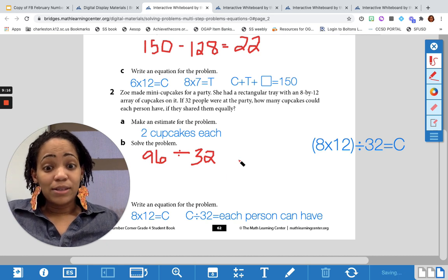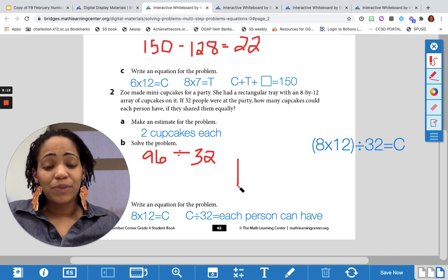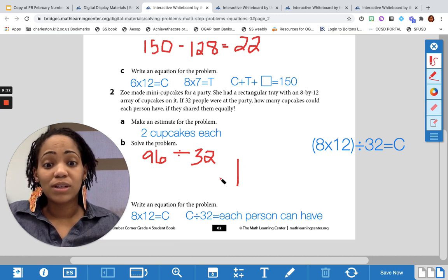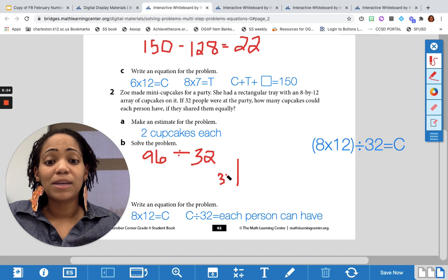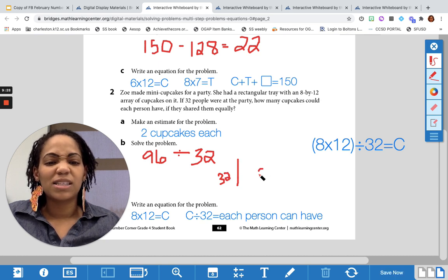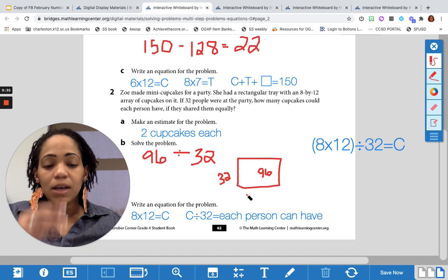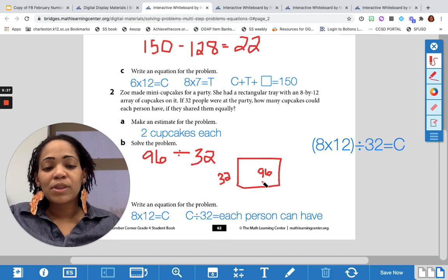How in the world are we going to do this? So here's what I'm going to suggest. We know we have 96 total, and we want it to be shared with 32 people. That means 96 is in this space right here. Yes. Okay. So let's take out one group of 32.